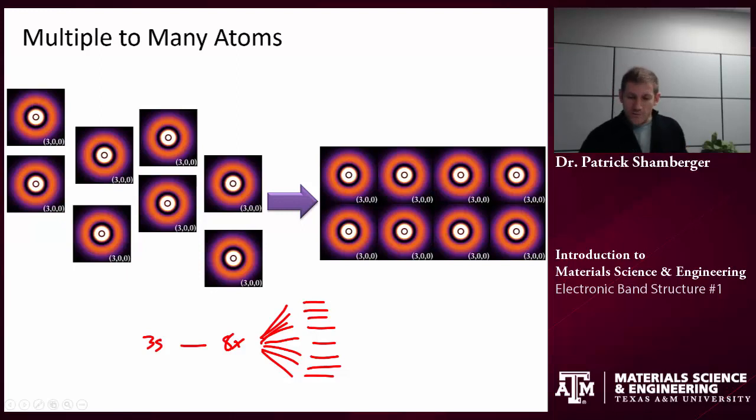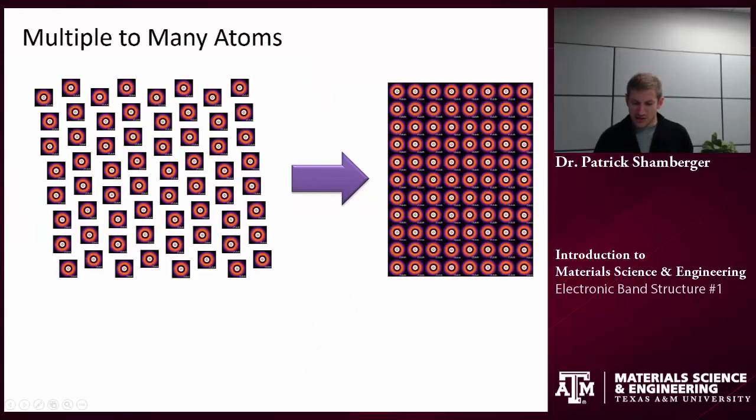So this is what we refer to as the linear combination of atomic orbitals model, LCAO. So as these atoms start to interact, their orbitals, their energy levels overlap. And in those valence level orbitals, I start to get splitting of energy levels.